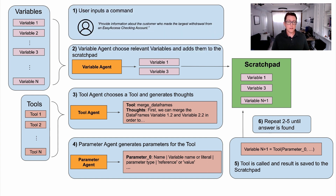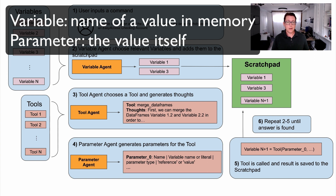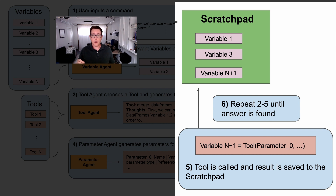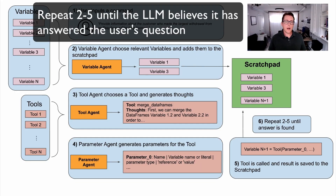Where a variable is a somewhat abstract concept — a name that refers to a value somewhere in memory — a parameter is the value itself that can be provided directly to the tool. Once we have the parameters, we run the tool on the variables and get a result. This result is stored back in the scratchpad because it could be a large result. The process of selecting variables, transforming them with tools, and saving the results is iterated until we have a final answer to the user's question.